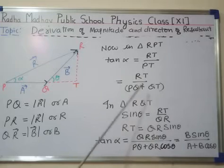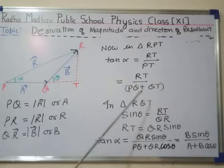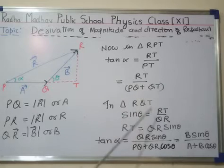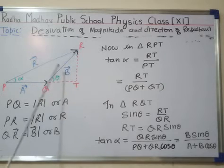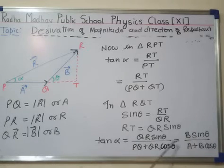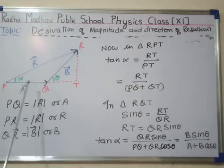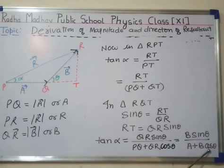Now when we put the value of RT here, it will become QR sin theta upon PQ. As we proved earlier, QT is equal to QR cos theta. Here QR is B, or mod of vector B, and PQ is A, or mod of vector A. So it will become B sin theta upon A plus B cos theta. So the formula for tan alpha, or the angle between these two vectors, is tan alpha equals B sin theta upon A plus B cos theta.